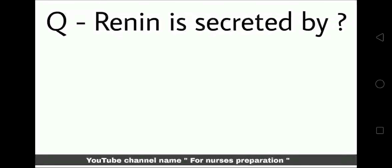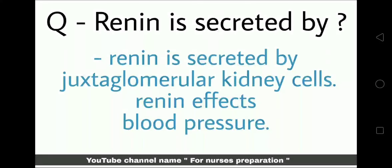Renin is secreted by juxtaglomerular kidney cells. Renin affects blood pressure.